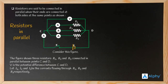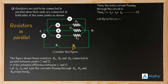What are I1, I2, and I3? They represent the sum of all the currents flowing through the different resistors. The total current flowing through the circuit is I1 plus I2 plus I3. Let Rp be the effective resistance between the points C and D.